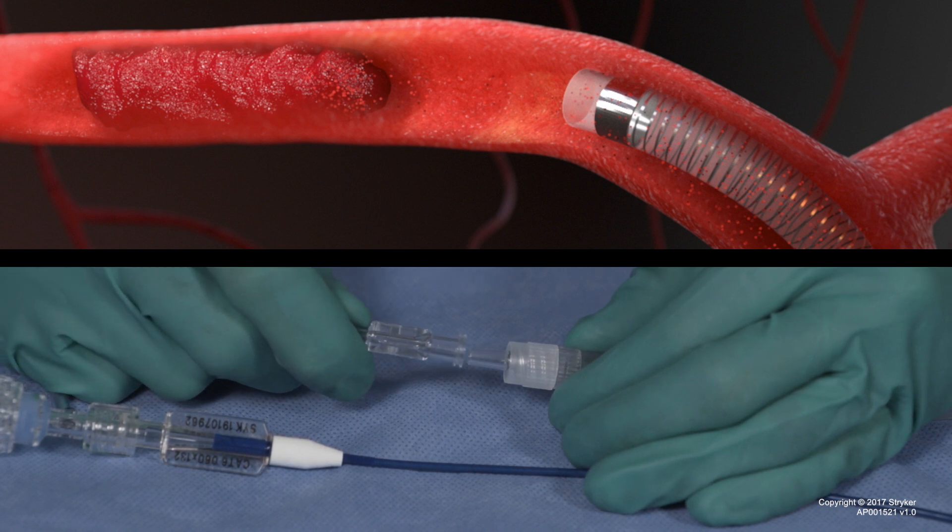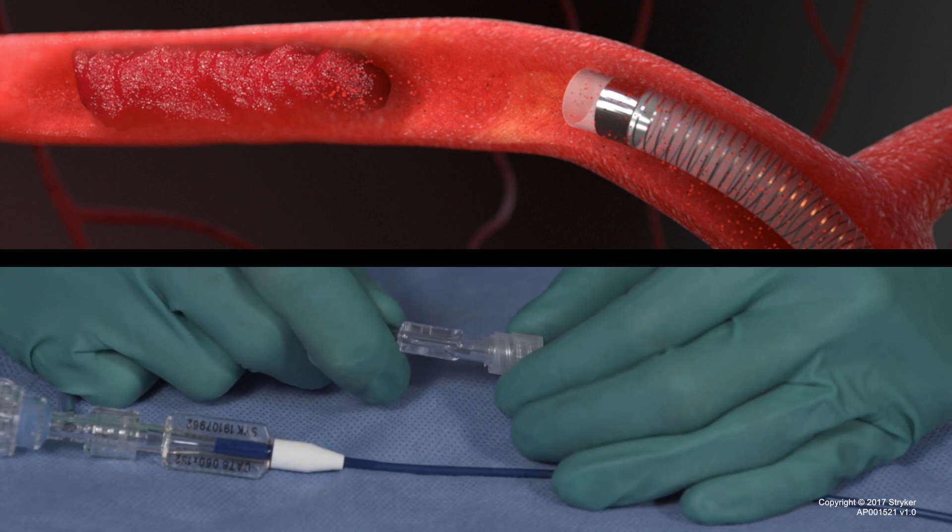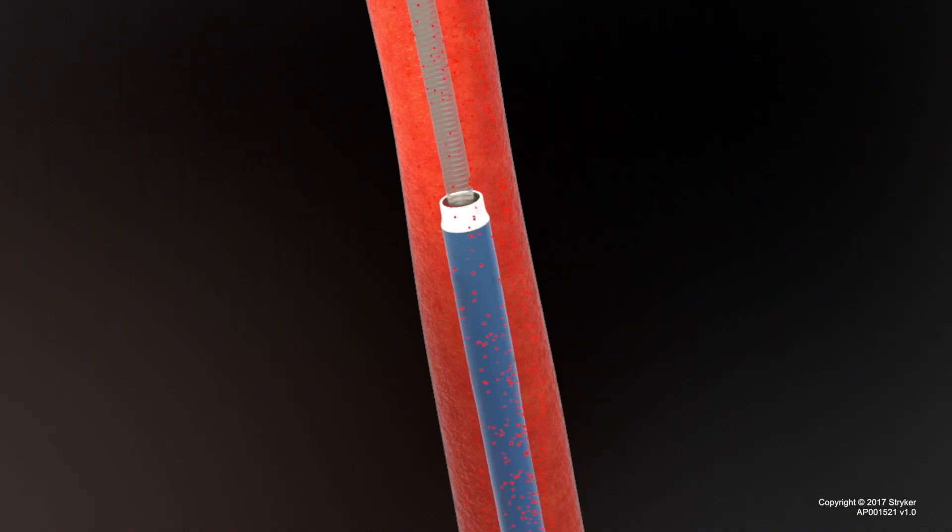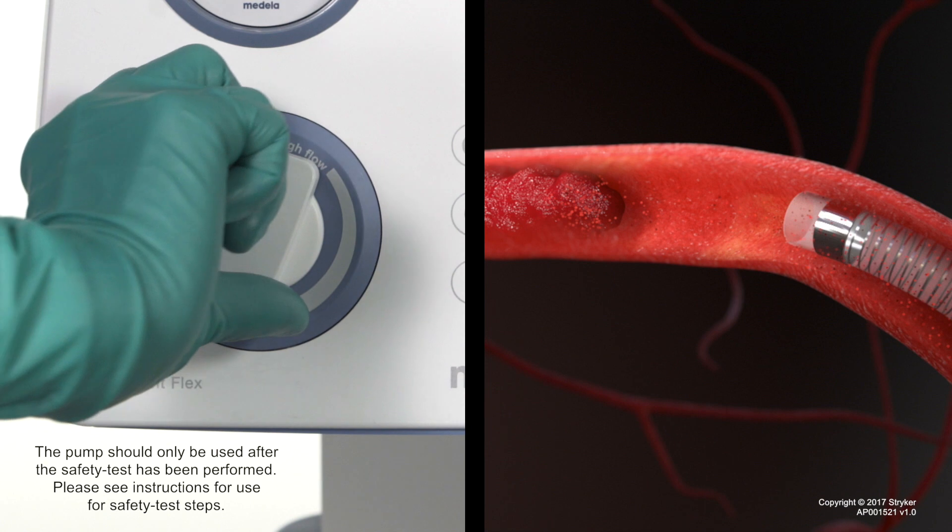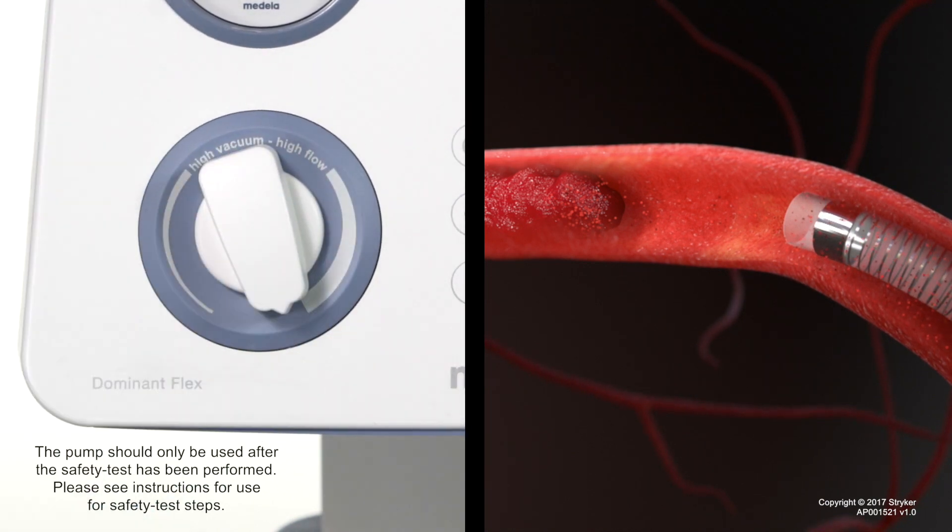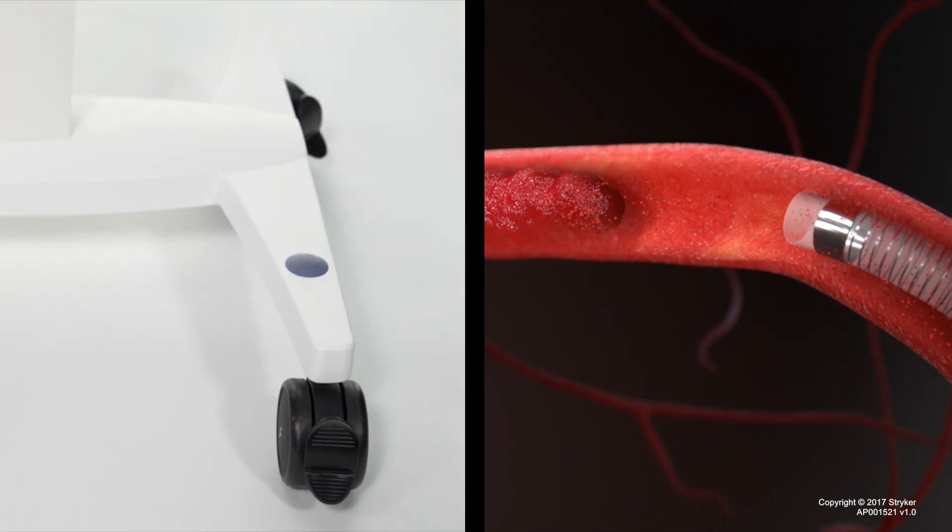Connect the aspiration tubing to the TUI borst or directly to the aspiration catheter. Inflate the balloon guide catheter. If the pump is not already on, set the vacuum gauge regulator to the desired level and turn on the pump.